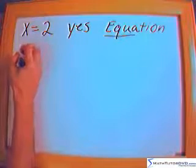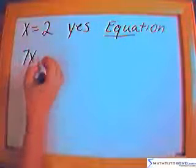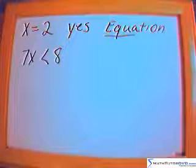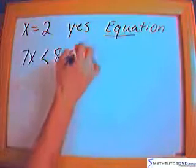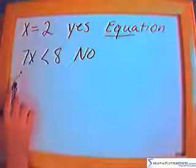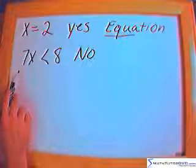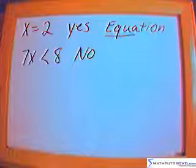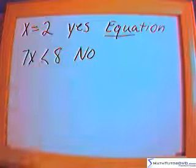Now what if we have something like 7x is less than 8. Is that an equation? By the definition that I've used so far, this is not an equation. So I'm going to put no. It does tell us something useful. I mean this is telling me that whatever x is, if I multiply it by 7 the answer is less than 8. So it's telling me something but there is no equal sign anywhere in there. So it is not an equation in the strict definition of the word.